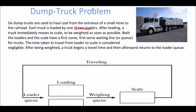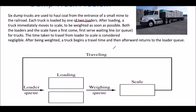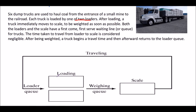If we simplify this particular problem into a more systematic diagram, this is what we have. We have two loaders with a loader queue associated with it, a weighing queue and a scale. The loader queue waits if the loaders are busy, and once a truck moves to the weighing queue, one from the loader queue occupies a loader. After being weighed, the truck travels and returns to the loader queue. This is the simplified model of the dump truck problem — you need to know the two queues, the number of loaders, the number of trucks, and the number of scales.